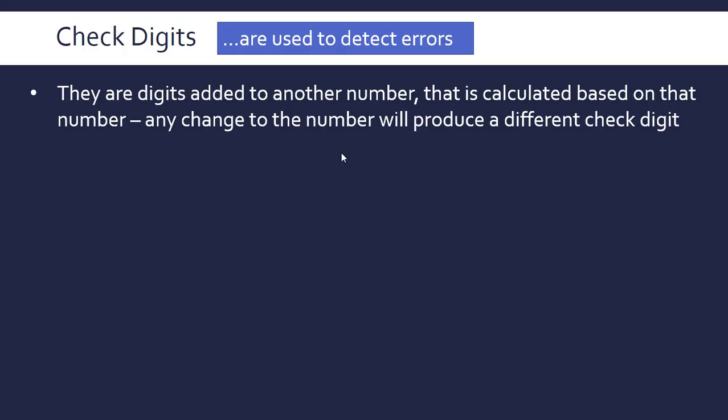In terms of what they actually are, they're digits—just numbers—added to another number, but calculated based on that number. The digits are calculated based on properties of the number they're attached to. The consequence is that any change to the number will produce a different check digit, so they can compare or recalculate it.